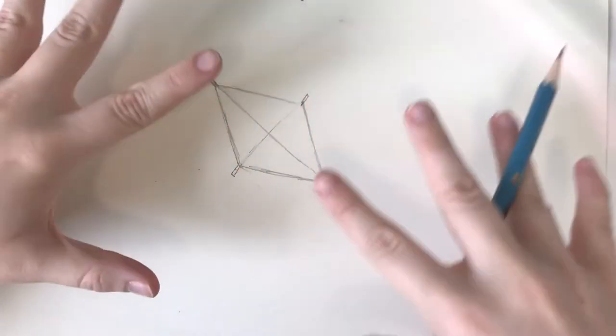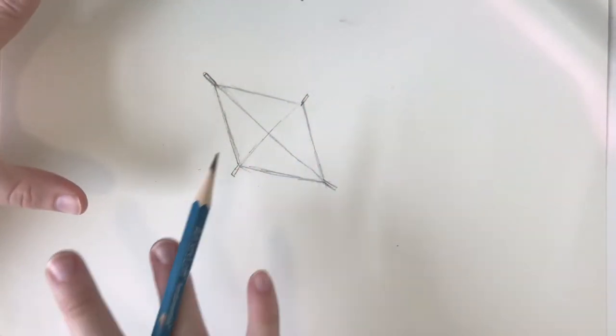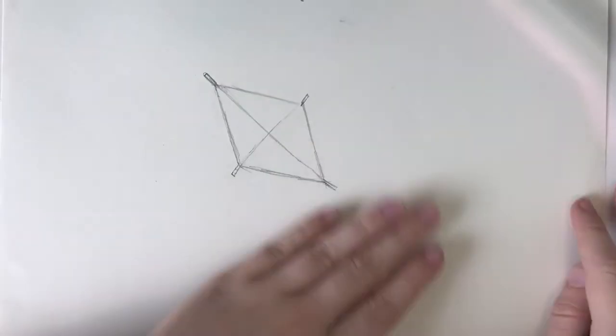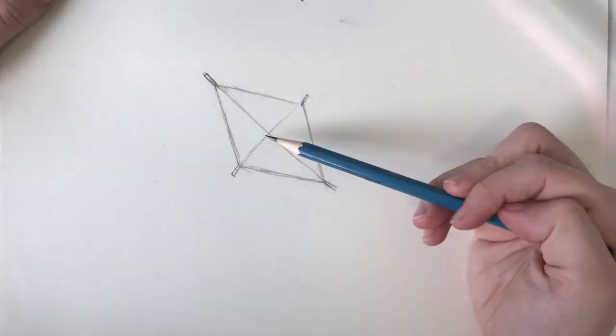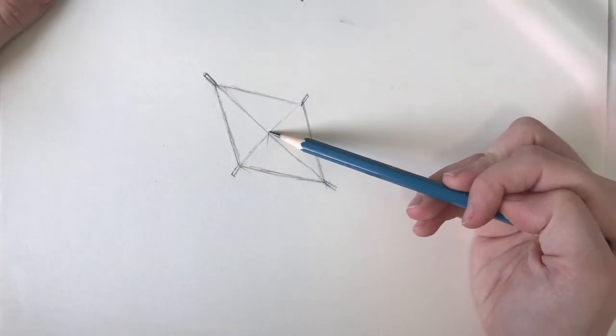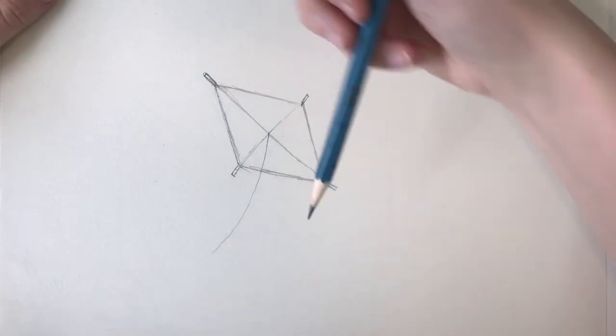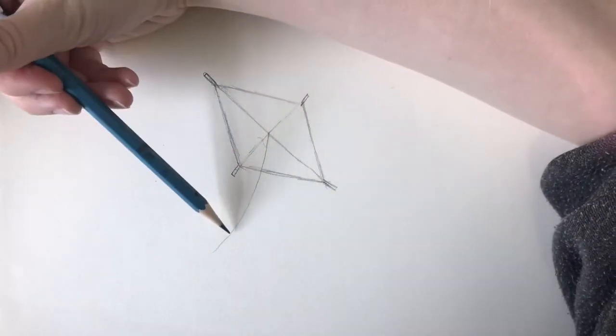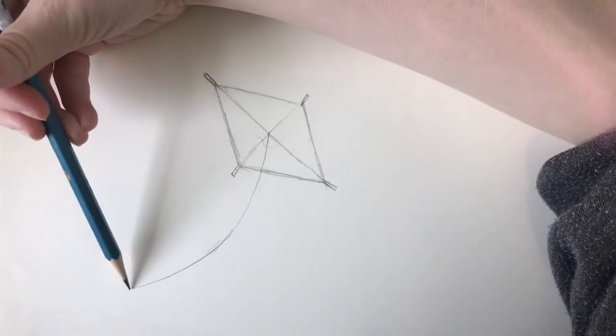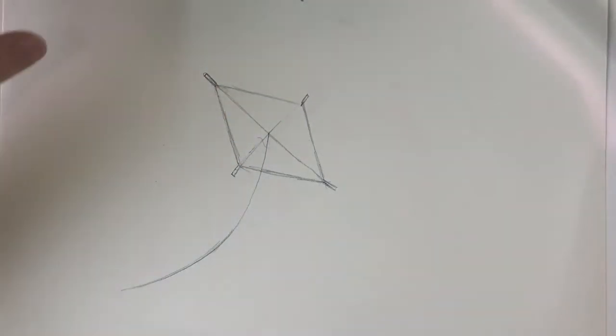Now I'm going to draw the string that the kite is being flown by. And for that, I'm just going to draw a little swoop. Swoop. Perfect.